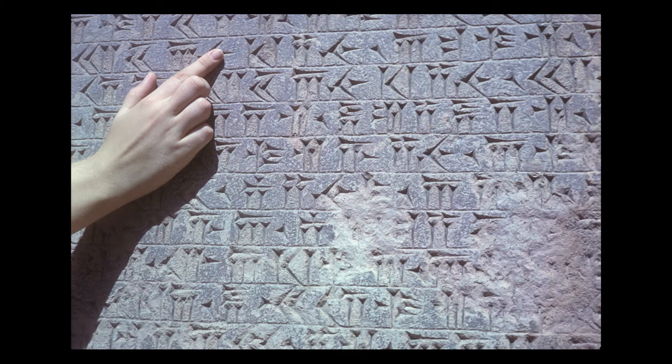Section 4: "King Darius says: Eight of my dynasty were kings before me; I am the ninth. Nine in succession we have been kings." Section 5: "King Darius says: By the grace of Ahuramazda I am king; Ahuramazda has granted me the kingdom." Section 6: "King Darius says: These are the countries which are subject unto me."